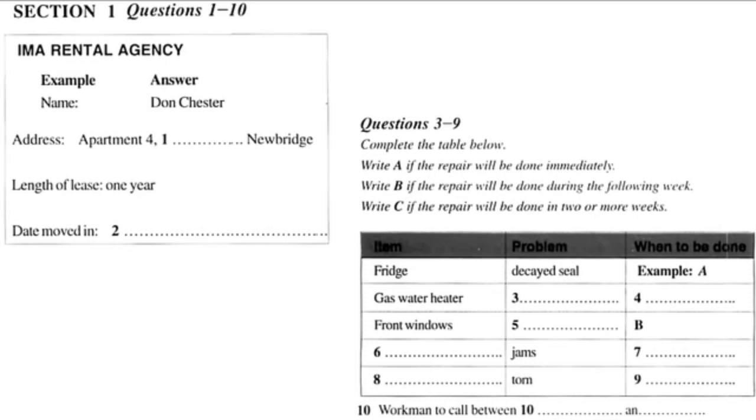Good morning. I am a rental agency. How can I help? Oh, hello. I'm ringing about some problems I'm having with my apartment. Yes, of course. If I can just get a few details first. What's your name? Don Chester. How do you spell that? C-H-E-S-T-E-R. OK. And the address? Apartment 4, 18 Ruby Lane. Ruby Lane. And that's in...? In Newbridge.